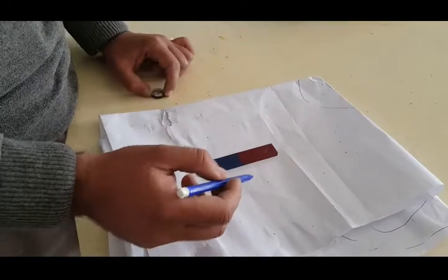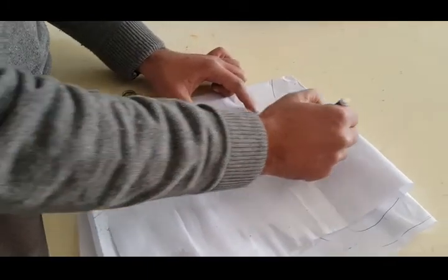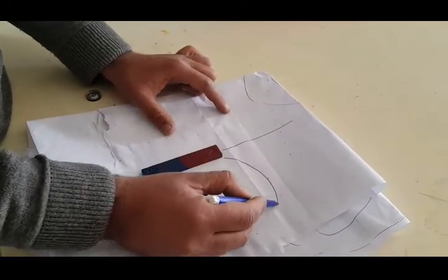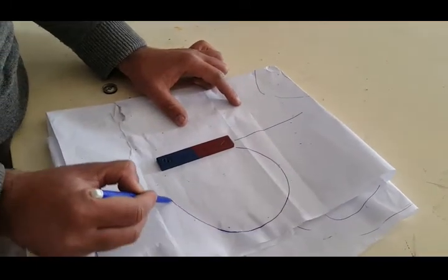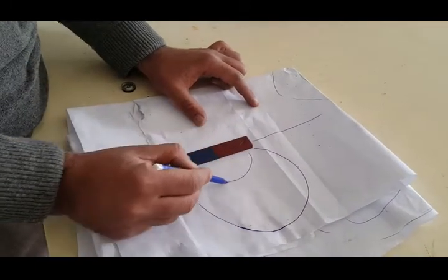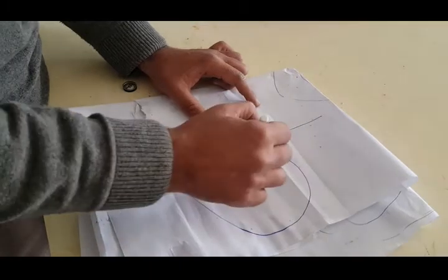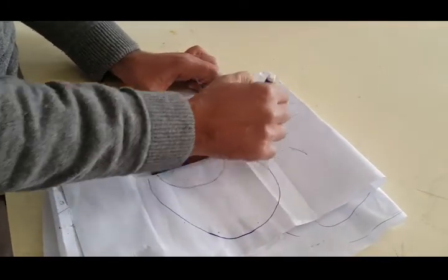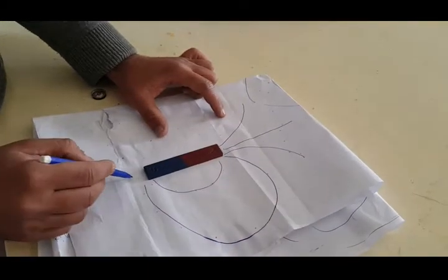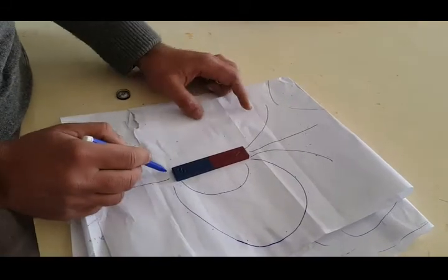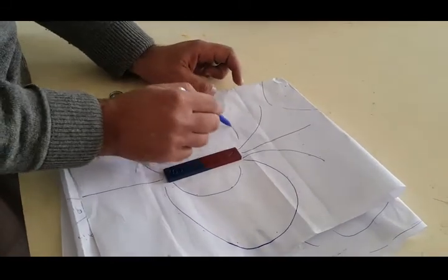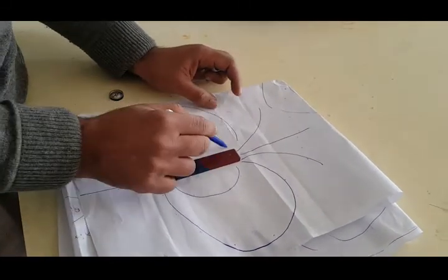Now join these points. You clearly see that after joining these points we get the path of magnetic field due to the permanent magnet.